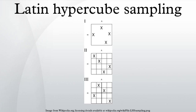In the context of statistical sampling, a square grid containing sample positions is a Latin square if there is only one sample in each row and each column.